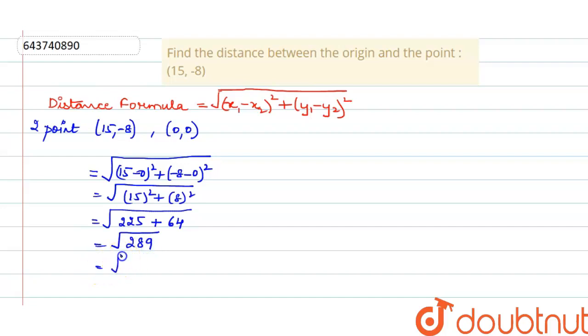Now 289 under square root is square of 17. So this will become square of 17. So from here it comes out to be 17. So therefore the distance between origin and 15, minus 8 is 17 units. That's the answer.